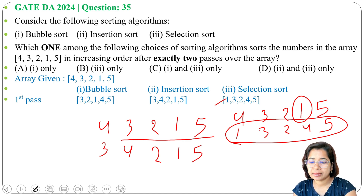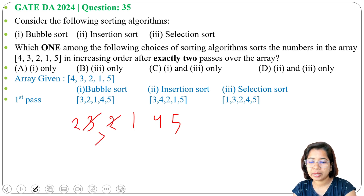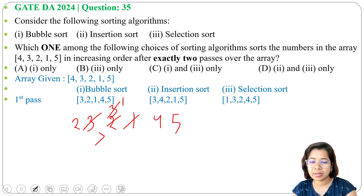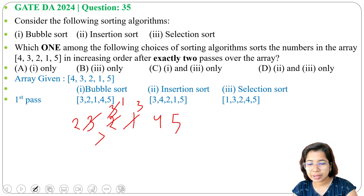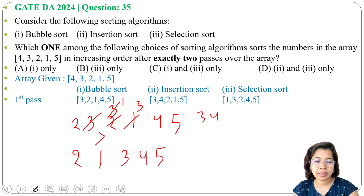Now the second pass. For bubble sort on 3 2 1 4 5: is 3 greater than 2? Yes, swap — 2 comes here, 3 comes here. Is 3 greater than 1? Yes, swap — 1 comes here. Is 3 greater than 4? No. Is 4 greater than 5? No. After pass 2, bubble sort gives 2 1 3 4 5.